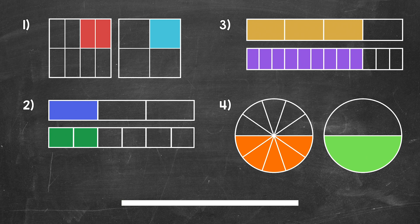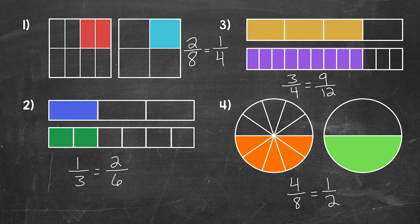Okay, so that's two minutes. Let's go over the answers. For number one, our equivalent fractions are two eighths and one fourth. For number two, our equivalent fractions are one third and two sixths. Moving on to number three, our equivalent fractions are three fourths and nine twelfths. And then lastly, for number four, our equivalent fractions are four eighths and one half.